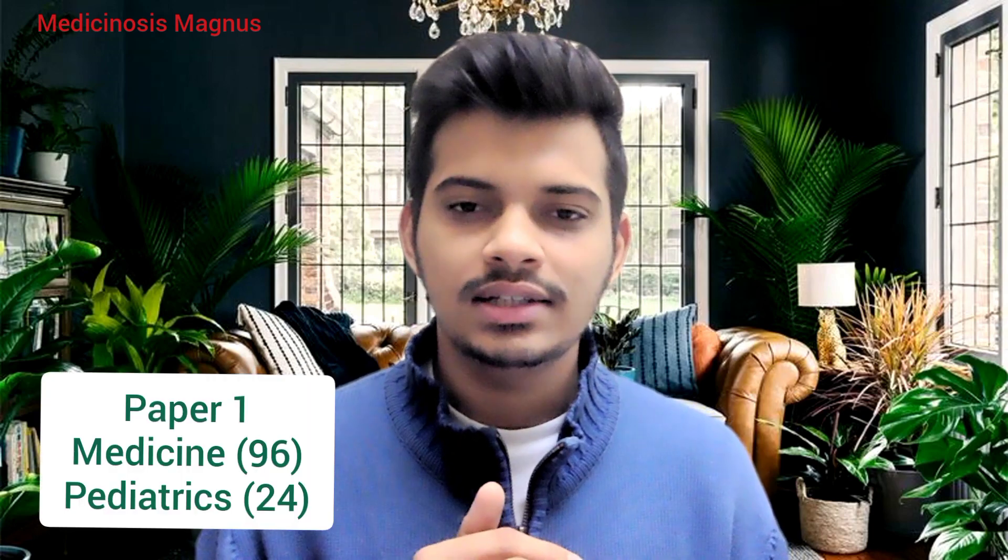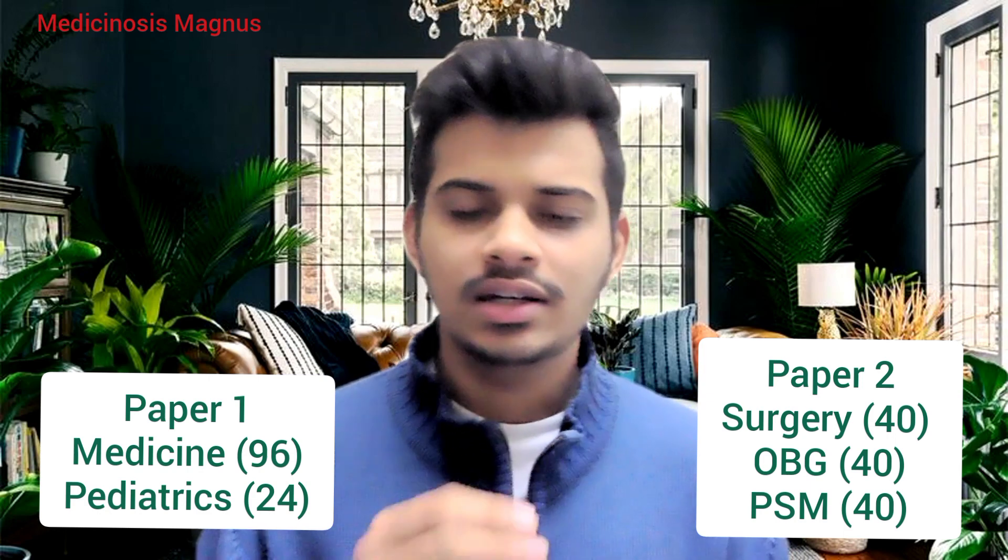We'll also solve previous year questions of the UPAC CMS exam. As we all know, UPAC CMS exam has two papers — Paper 1 has Medicine with 96 questions and Pediatrics with 24 questions. In Paper 2 we have Surgery with 40 questions, OB Gynae with 40 questions, and PSM with 40 questions. All minor final year subjects are incorporated in these — for example, Dermatology and Ophthalmology in Medicine questions, and Anesthesia and ENT in Surgical questions.